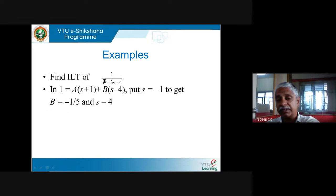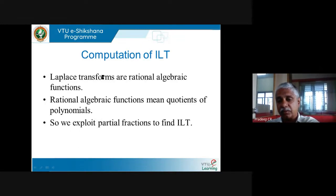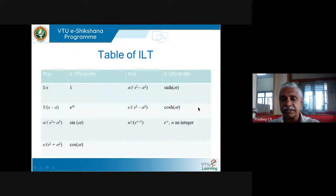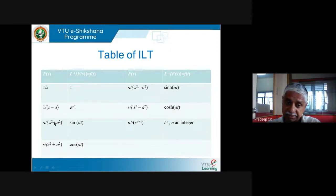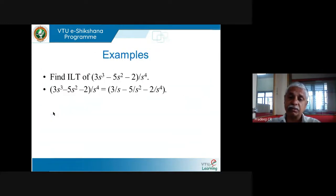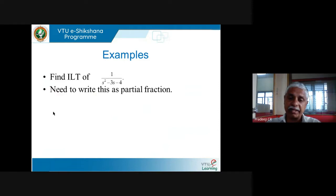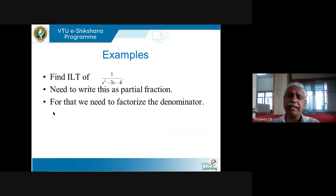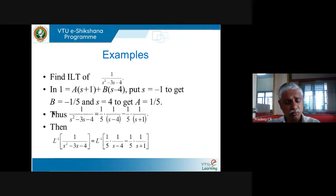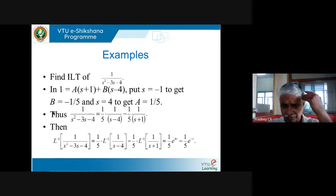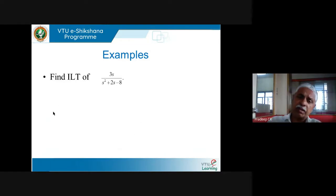In the inverse Laplace transform table, if I have 1/(s-a) I know how to find its inverse Laplace transform. For the given problem the function is more complicated, but by writing it as a sum of 1/(s-a) terms for various values of a, the problem becomes tractable. This is the method of partial fractions — please go through these carefully at least once more.